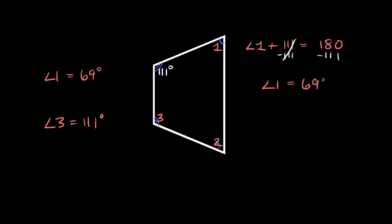Lastly, to solve for angle two — the base angles are the same, so this acute angle is equal to this acute angle. If this angle is 69 degrees, then angle two is also 69 degrees.